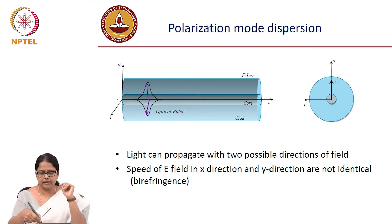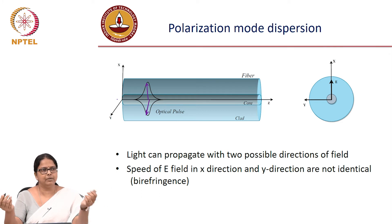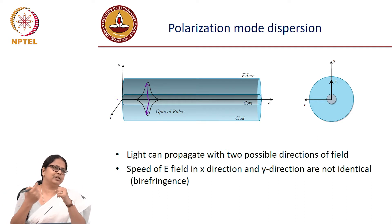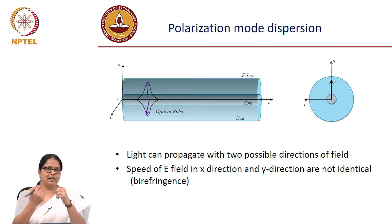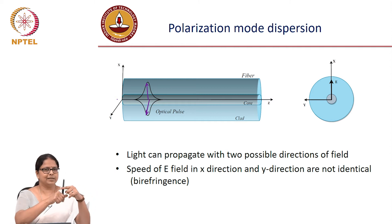For convenience, we mark an X and Y axis, but in a fiber there is no inherent reference for which is X and which is Y. In a connector you may have a notch to define one axis, with the perpendicular being the Y axis.